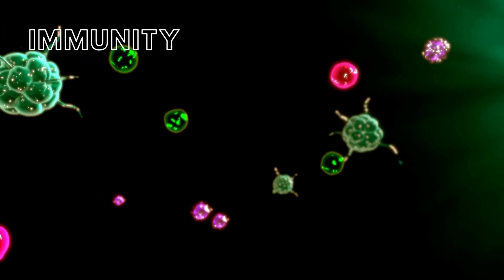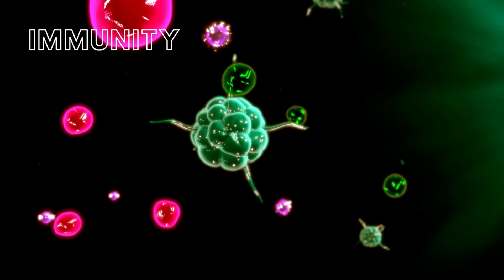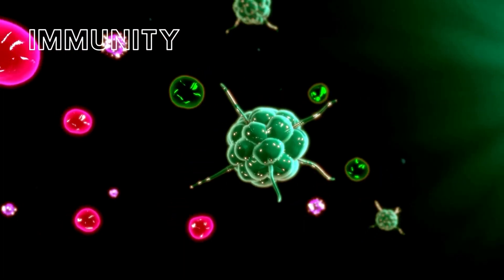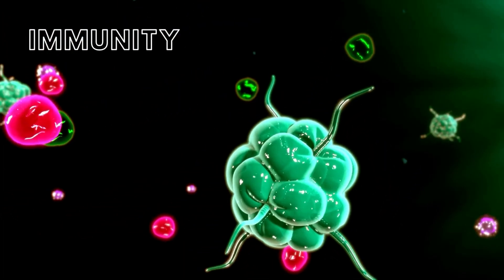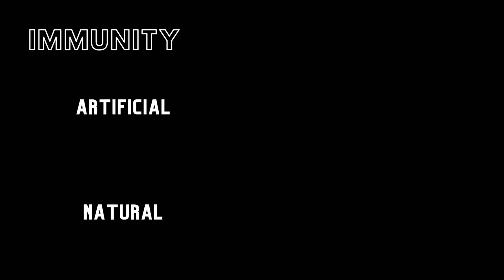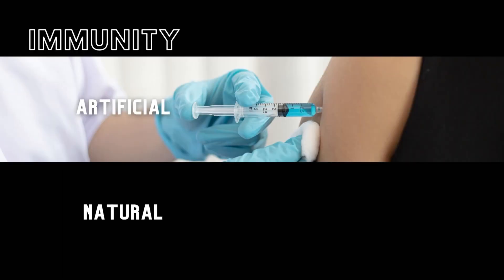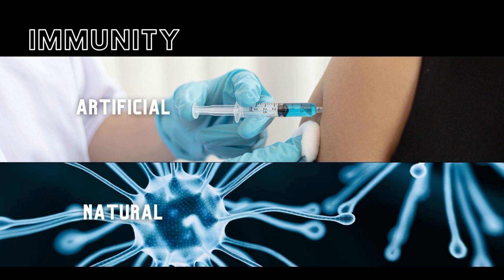This type of immunity is not inherited at birth. Rather, it is acquired over time following exposure to pathogens. The two types of specific immunity are artificial or natural. Artificial immunity is acquired through vaccinations, while natural immunity is acquired by everyday encounters and exposures to disease-causing agents and pathogens.